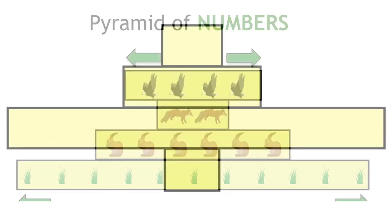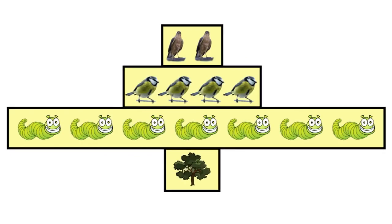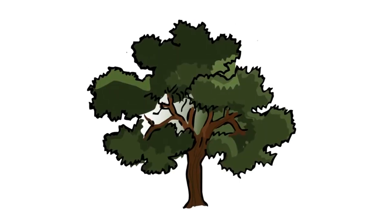Pyramids of numbers can end up looking a bit wonky. For example, if one primary producer can feed lots of primary consumers, like an oak tree which feeds lots and lots of little caterpillars.